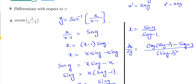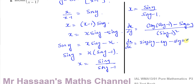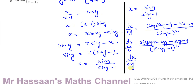Applying the quotient rule: dx/dy equals cosine y times (sine y minus 1) minus sine y times cosine y, all divided by (sine y minus 1) squared. Expanding and simplifying: the sine y cosine y terms cancel, leaving dx/dy equals minus cosine y over (sine y minus 1) squared.